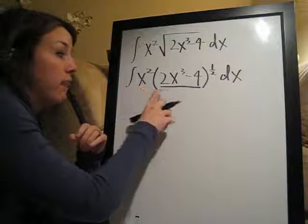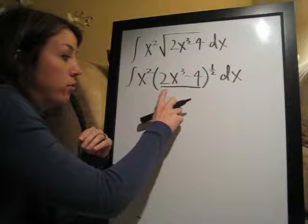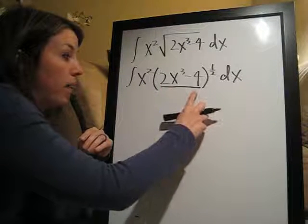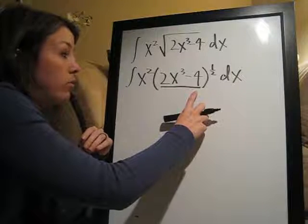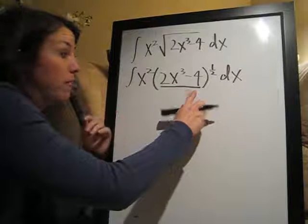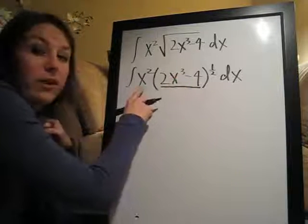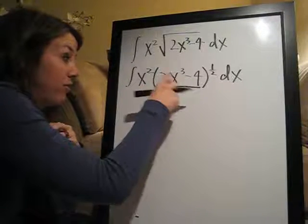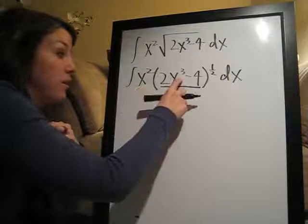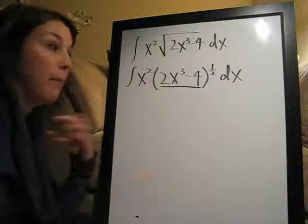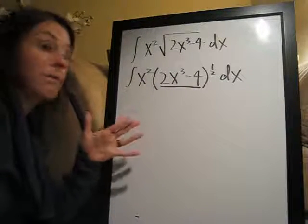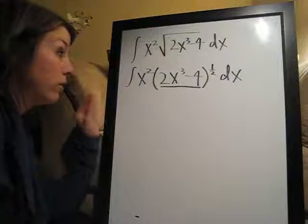So if you ever identify that whatever you're going to use as your u in a potential u-substitution problem has something with an exponent that's one higher than what's out here, since this is x to the third and this is x to the second, this being one higher than this, good chance that it might be a u-substitution problem. So let's try it.